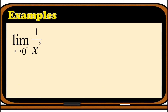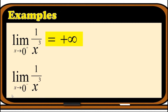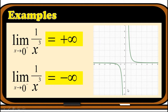Another example: the limit of 1 over x cubed as x approaches 0 from the right is positive infinity. For the limit of 1 over x cubed as x approaches 0 from the left: since the exponent is odd and we approach from the left, using the theorem the answer is negative infinity. On the graph, approaching 0 from the right the graph goes upward, and approaching from the left the graph goes downward continuously.